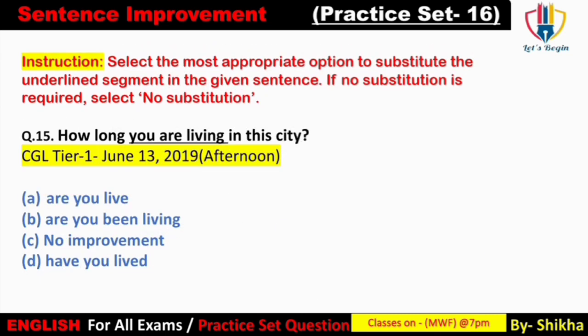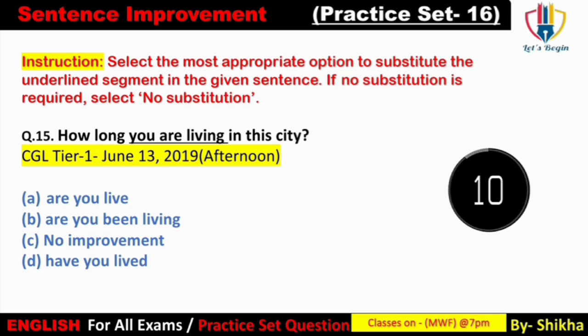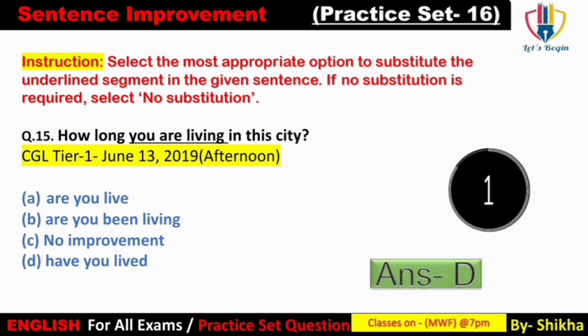Next: 'How long you are living in the city?' Interrogative question mein pehle helping verb aata hai, uske baad subject. Sentence mein subject ke baad helping verb 'are' diya gaya hai — yeh galat hai. Option A 'are you leave' — galat. Option B 'are you bill leaving' — 'are' ke saath 'been' ka use nahi hota. Answer: option D — 'How long have you lived in the city?'